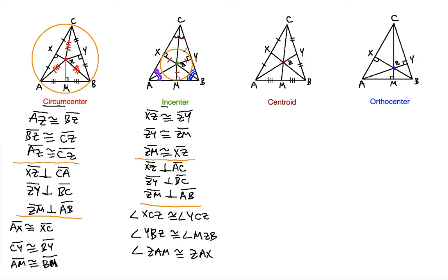Like in the circumcenter case, the circle will not always be visible — you will have to identify what it is. Usually you will be given three pairs of congruent angles, which tells you there are angle bisectors, along with perpendicular indications. You will immediately know you are talking about an incenter. The incenter is mainly characterized by the perpendicular relationship and the angle bisectors.